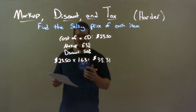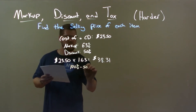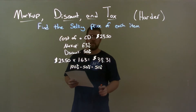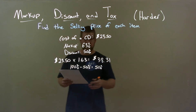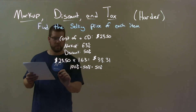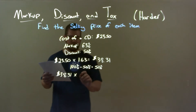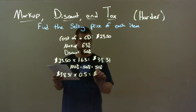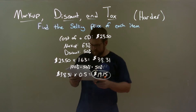Now, they tell us we have a 50% discount, and so we take 100% minus 50%, that leaves us with 50% — easy calculation. But what this 50% represents is 50% of that price after the markup. So we take that $38.31 and multiply that by 50% as a decimal, 0.5, and that gives us a final sale price of the CD of $19.15.